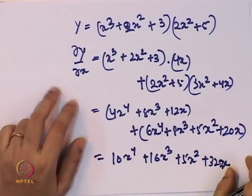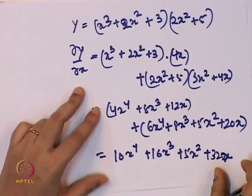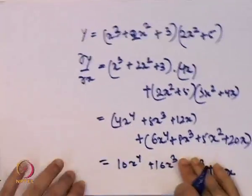So when the functional form is a product of two functions, we take the derivative by keeping the first function constant and differentiating the second, then keeping the second constant and differentiating the first.